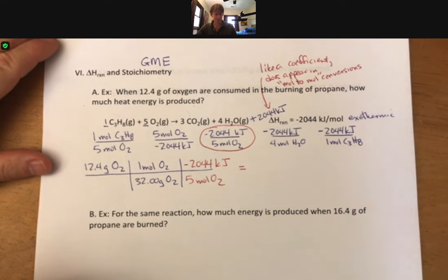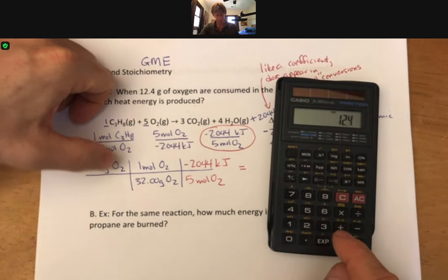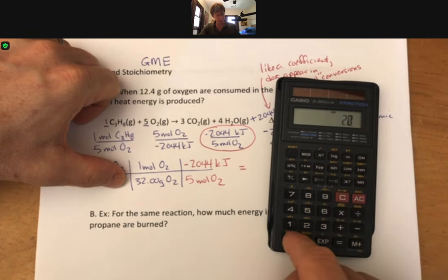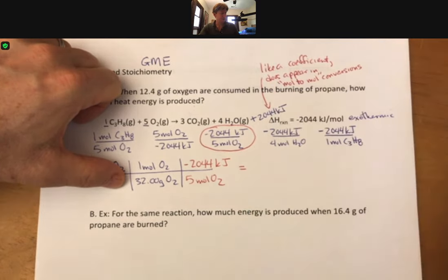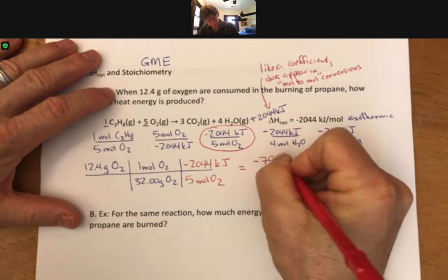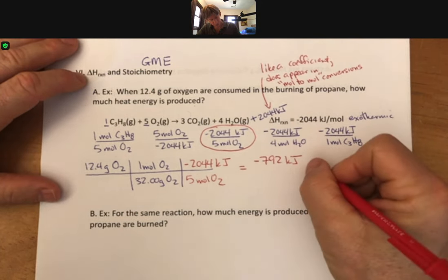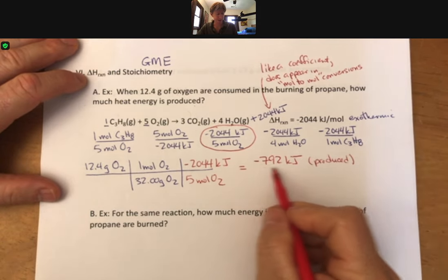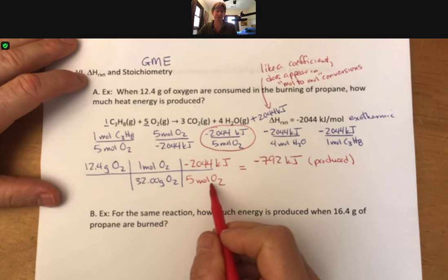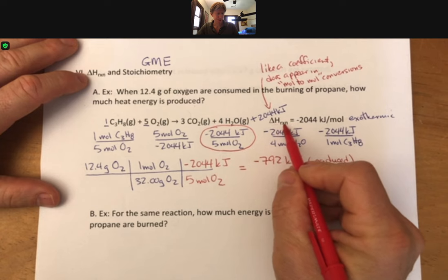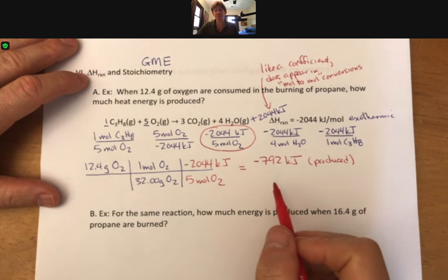We end up with our final number. Let's multiply this out: 12.4 grams divided by 32 times 2044. I get minus 792 to three sig figs. And you'll note that the units are just kilojoules there. We could also write produced. Because it's negative, that means that energy is being produced or given off. Our units of moles actually cancel out. Delta H of reaction will be kilojoules per mole, but once you end up with a calculation like this, it'll just be kilojoules.